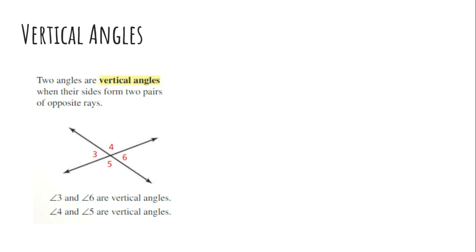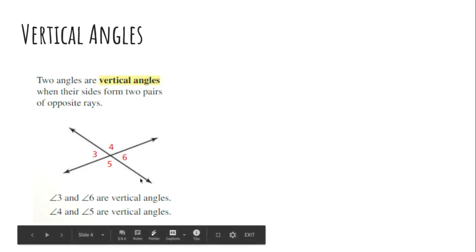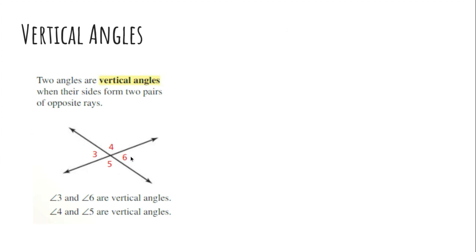Okay, so what does that mean in normal people speak? It means if you have two lines that are intersecting like this, angles three and six are considered vertical angles, and angles four and five are considered vertical angles.